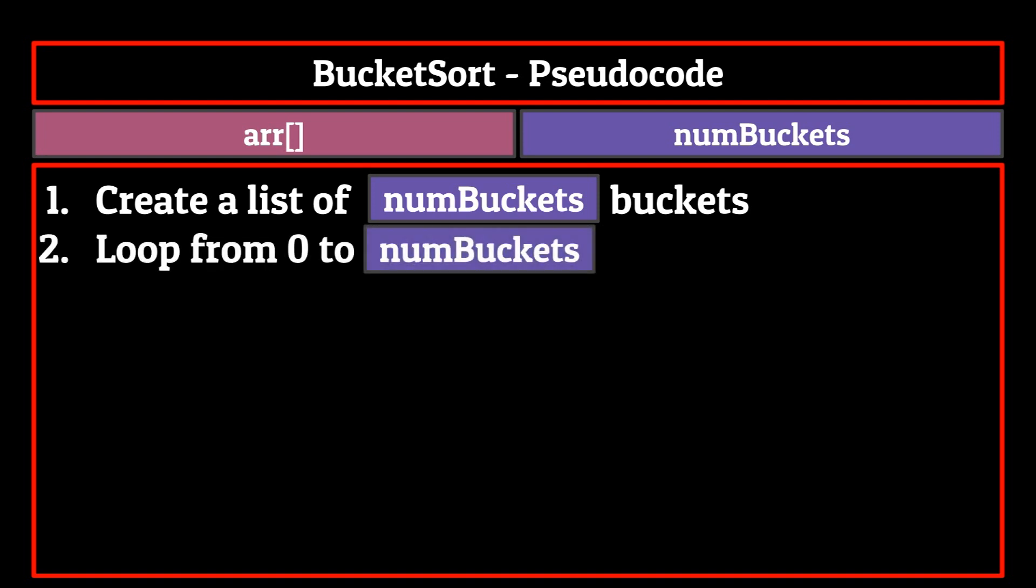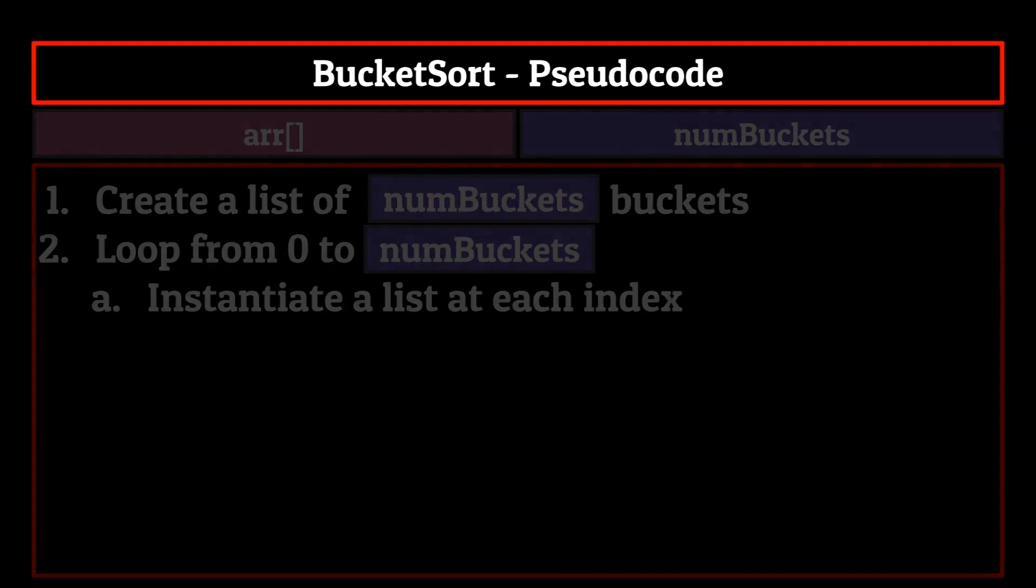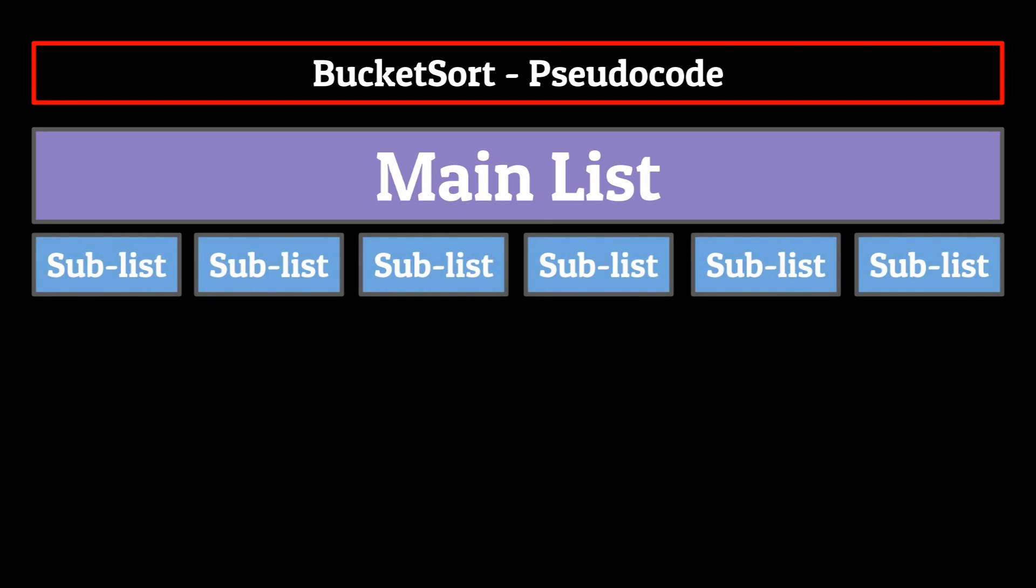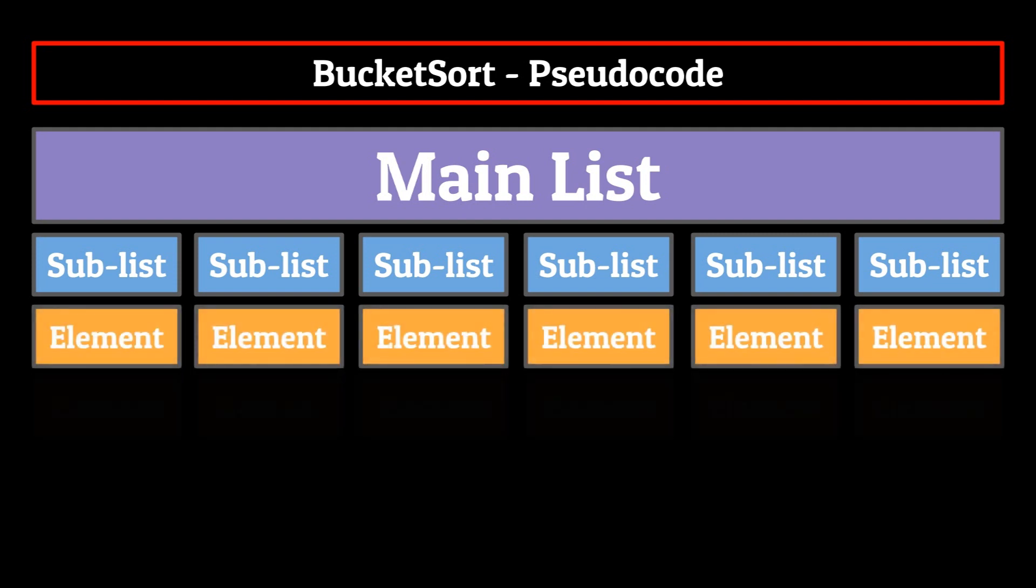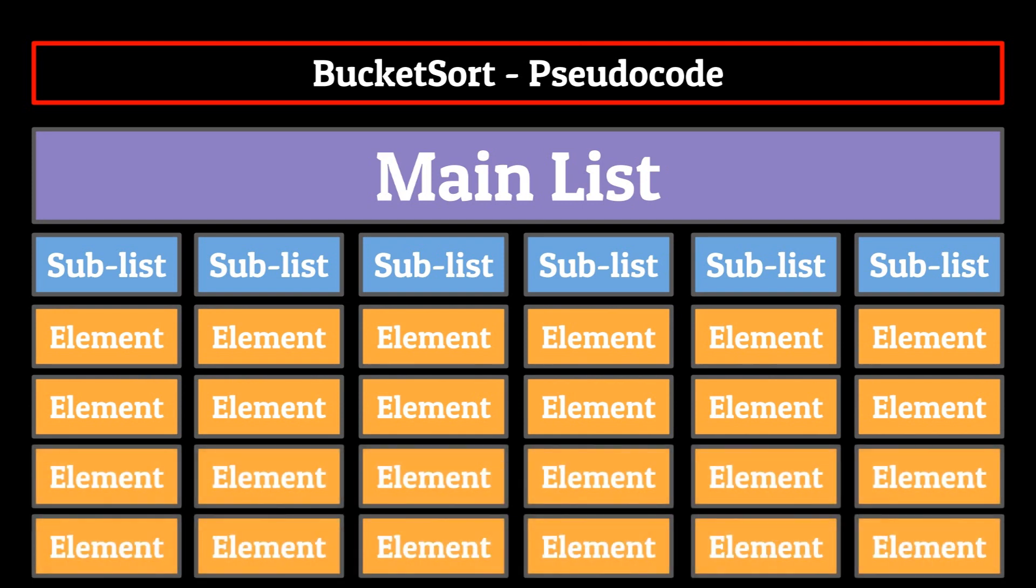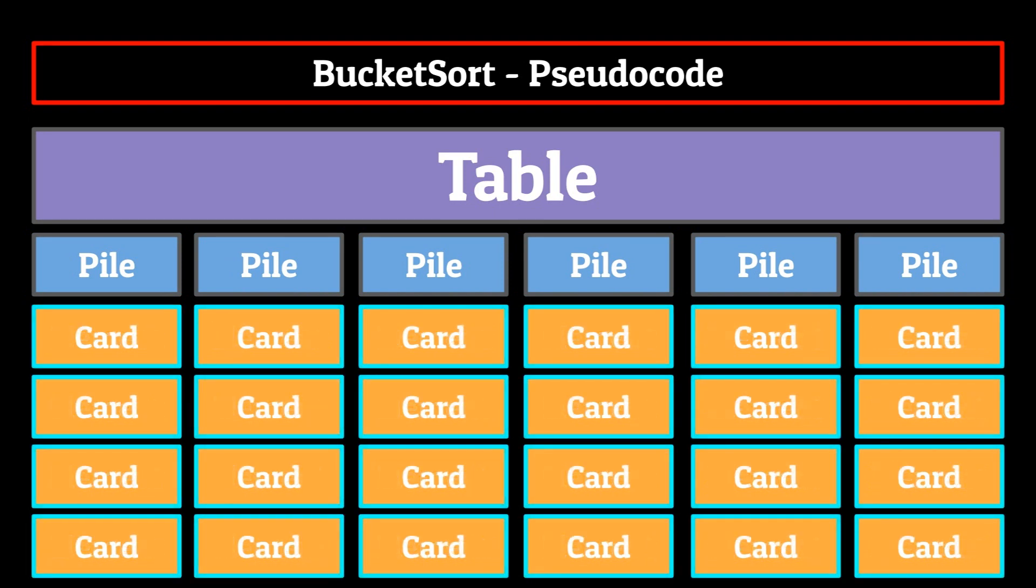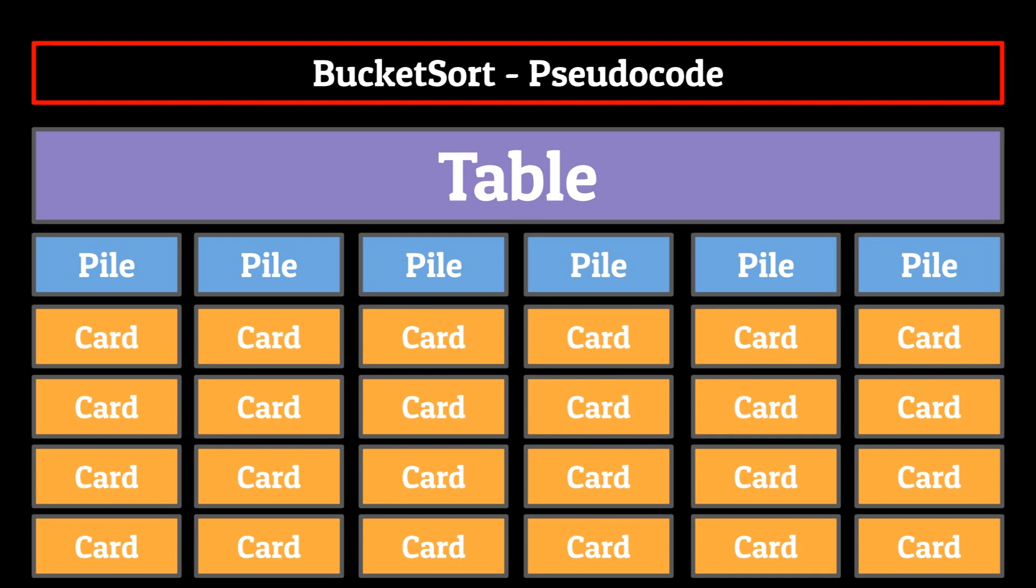The first bit of actual code is to create a list called buckets, whose size is equal to the number of buckets that was passed into the function. Then we enter into a for loop. This loop runs from zero to the number of buckets. The purpose of this for loop is to instantiate a list at each index of the list.